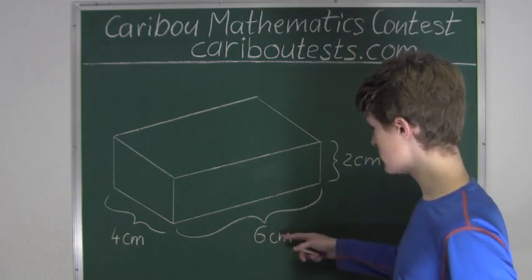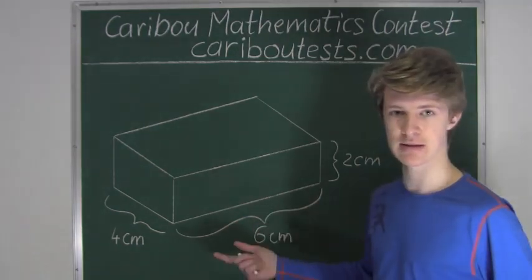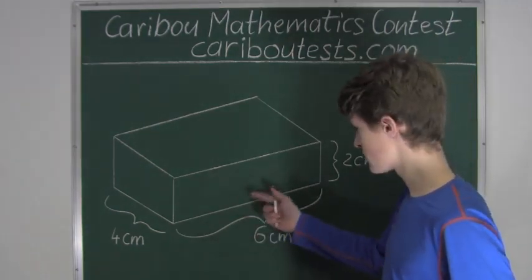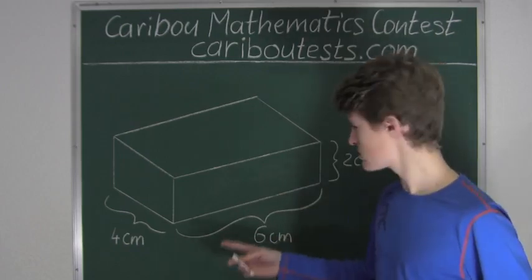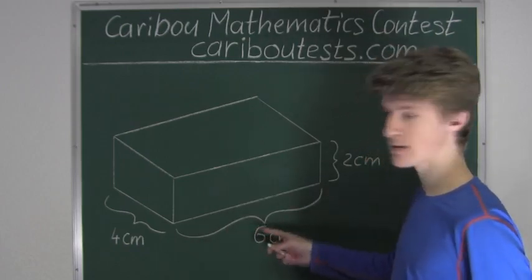Therefore, 6cm must be a multiple of the side lengths of one of those cubes, which also means that the side lengths of one of those cubes must be a factor of 6.